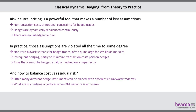Before we get into deep hedging, let's start with risk neutral pricing. Risk neutral pricing is the core of derivatives pricing and hedging that people have used since the 70s. It's really powerful and an amazing tool, but it does make a few key assumptions. The first is that when you do hedges, there are no transaction costs and no notional constraints on your hedge trades. The second is that you're dynamically rebalancing your hedges continuously. The third is that there are no unhedgeable risks. In practice, all those assumptions are violated to some degree or another.